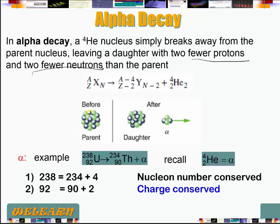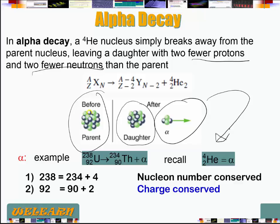Let's see, the parent is going to end up breaking into a daughter and an alpha particle. The alpha particle is the helium nucleus, which is made up of four nucleons altogether, two protons and two neutrons.